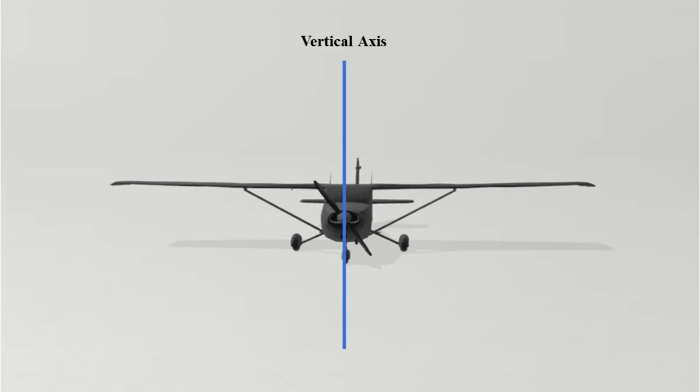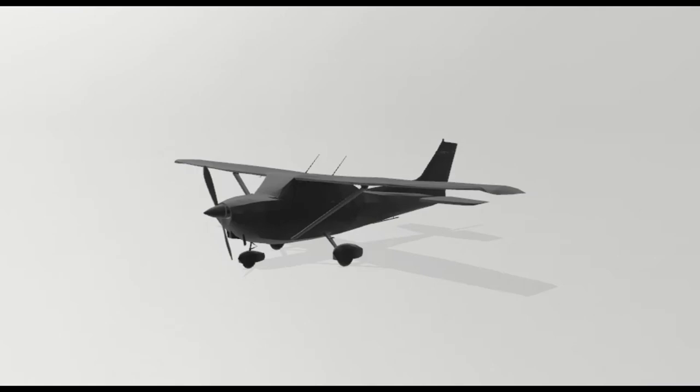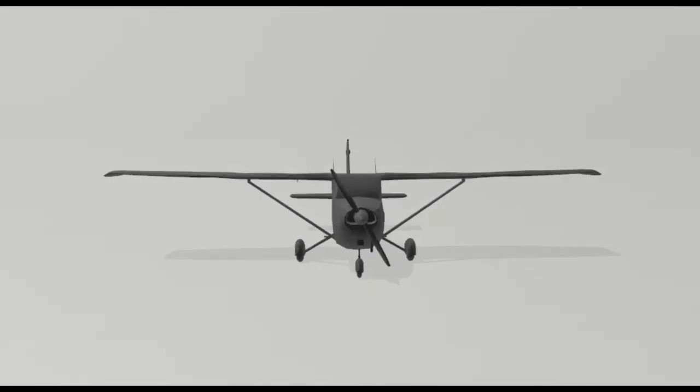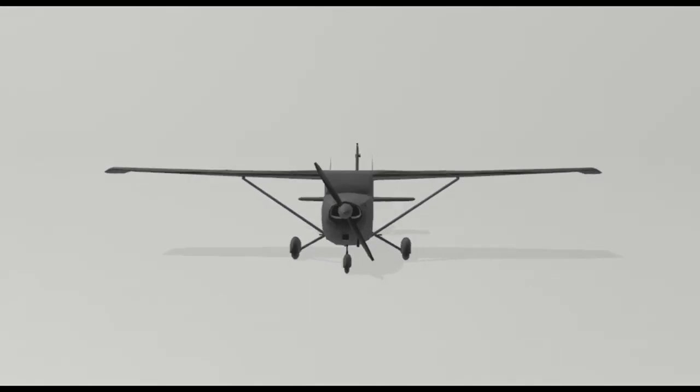The vertical axis has its origin at the center of gravity and is directed towards the bottom of the aircraft, perpendicular to the wings and the fuselage reference line. Motion about this axis is called yaw. The rudder is the primary control of yaw on a fixed-wing aircraft.